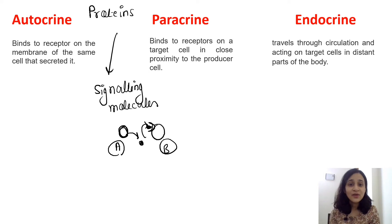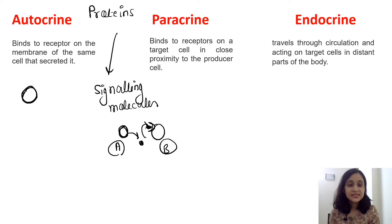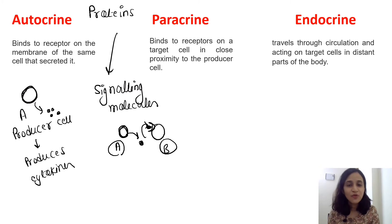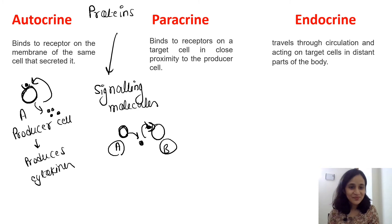Cytokines can act in three ways. The first one is autocrine action — they bind to receptors on the membrane of the same cell that secreted it. Suppose this is cell A, the producer cell, and it produces cytokines. These cytokines are released from cell A and they will act on this same cell A. This is called autocrine action.